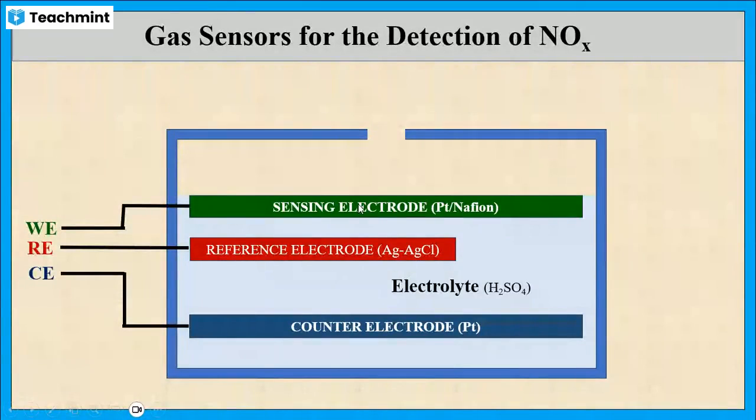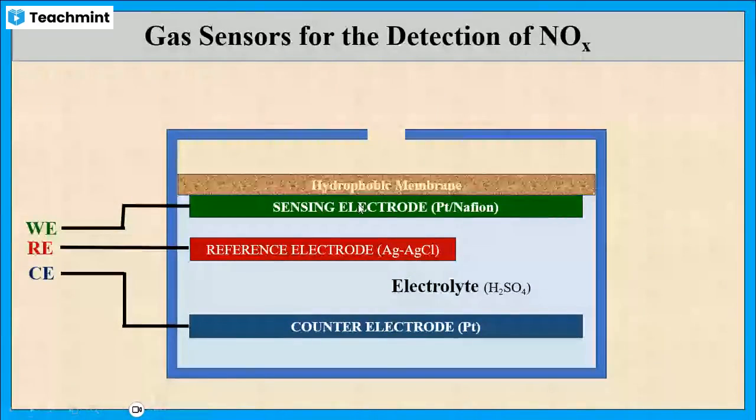The sensing electrode is attached with a gas permeable hydrophobic membrane. It allows the analyte gas to flow into the sensor and restricts the penetration of moisture.